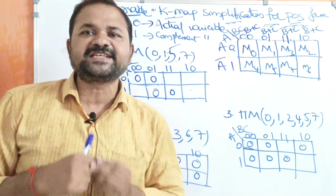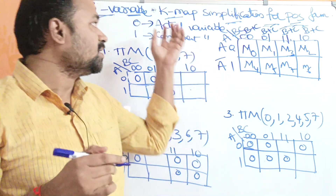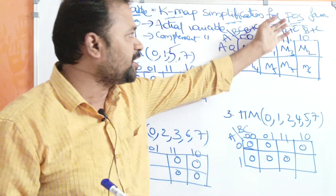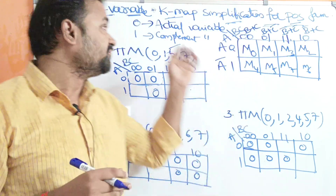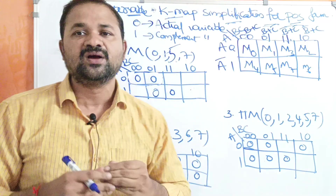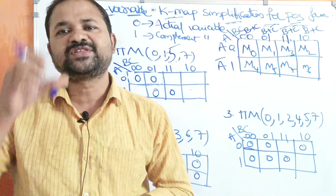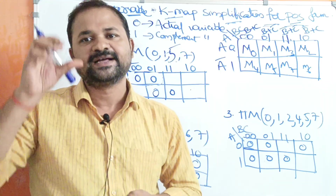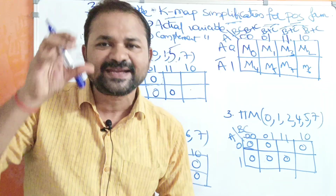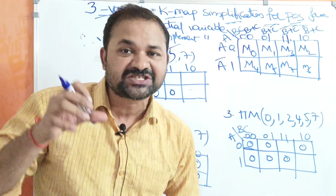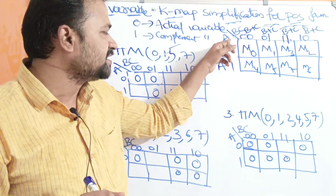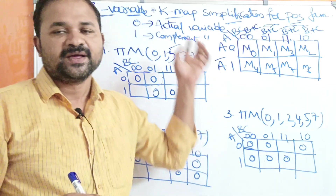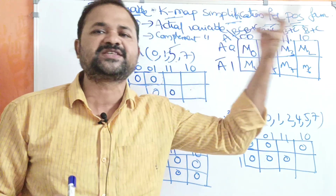Now let us discuss how to simplify Boolean expressions which are in POS form with the help of a three-variable Karnaugh map. Three variables means we will have 2³ = 8 cells or squares. The left-hand side represents variable A and the right-hand side represents BC. The expressions here are in POS form.